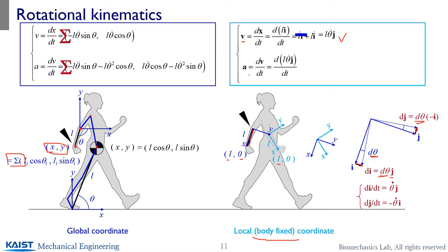For the acceleration, when you take the derivative of the velocity, you get the theta-double-dot term and also the derivative of j-dot, which is minus theta-dot i. Finally you end up with two components for your acceleration in the body-fixed local coordinate.